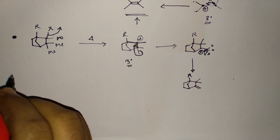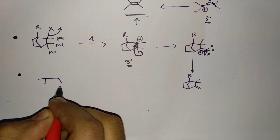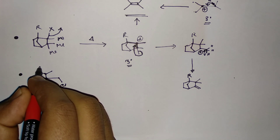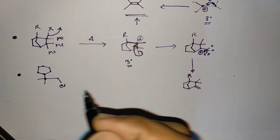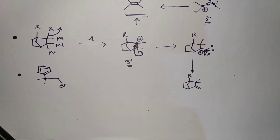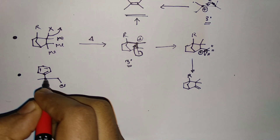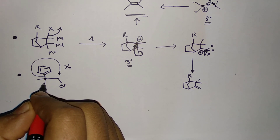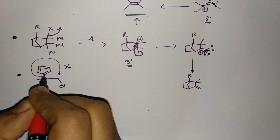The next example shows migration of a phenyl group. The migratory aptitude of a phenyl group is much greater than that of a methyl group or a proton (H atom). So phenyl group migration occurs much more favorably. When a system contains both methyl and phenyl groups, phenyl migration is preferred over methyl migration.